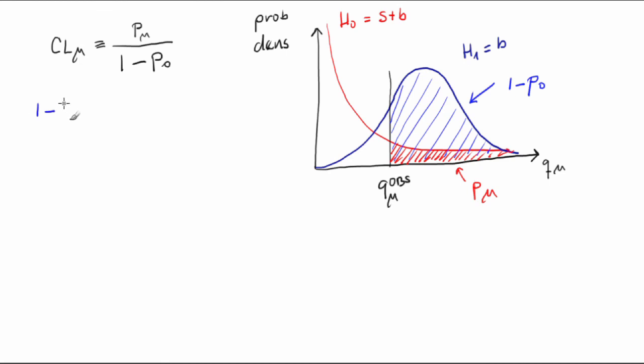Here, 1-p0 is equal to the integral from q-sub-mu obs to infinity f of q-sub-mu given 0 dq-sub-mu.